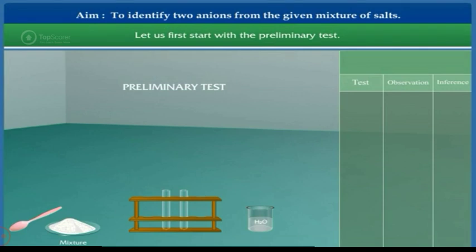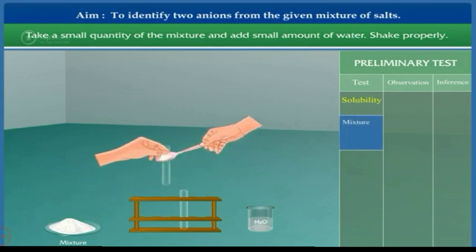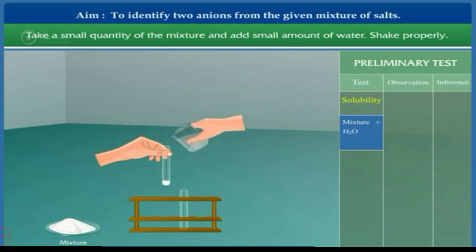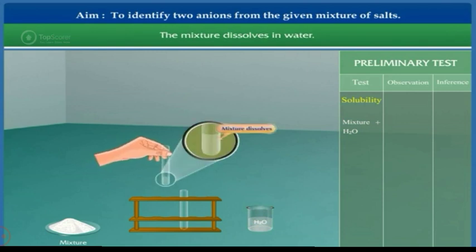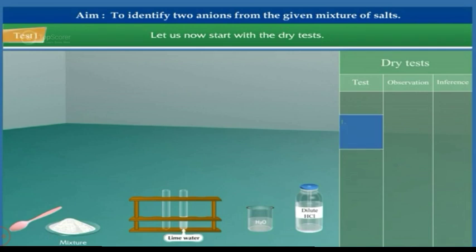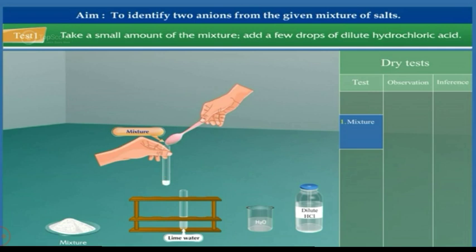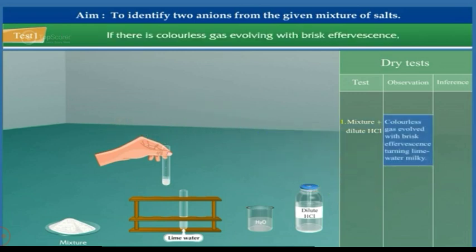Let us first start with the preliminary test — Test of solubility. Take a small quantity of the mixture and add a small amount of water. The mixture dissolves in water. This shows that water-soluble carbonate, chloride, bromide, iodide, nitrate, or sulfate may be present. Let us now start with the dry test. Test 1: Take a small amount of the mixture and add a few drops of dilute hydrochloric acid. If there is a colorless gas evolving with brisk effervescence, allow it to react with lime water.